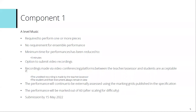For A-level music, there were similar changes, but it remained to be a performance of one or more pieces. A-level music doesn't have the requirement for ensemble, but if a student chooses to, they could continue and perform as part of an ensemble if they wanted to. The minimum time duration for A-level performance for the Pearson specification was reduced to a minimum of three minutes. Again, there were the options to submit video recordings or a video recording over a video conferencing platform where the teacher makes the unedited recording, with the student and their instrument remaining in view at all times.